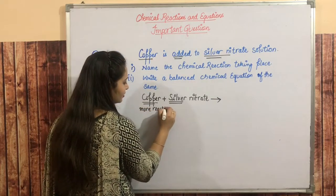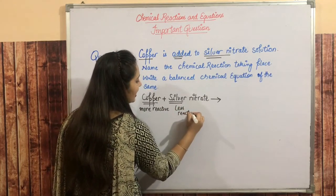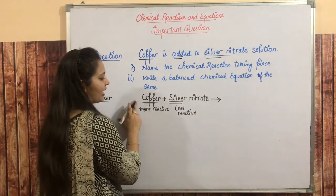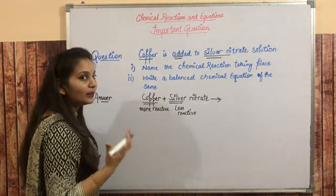While silver is less reactive. So we know that more reactive elements replace less reactive elements in the compound.